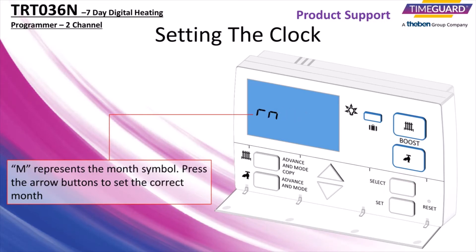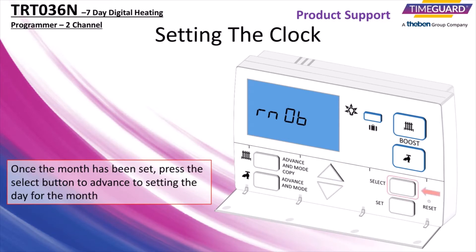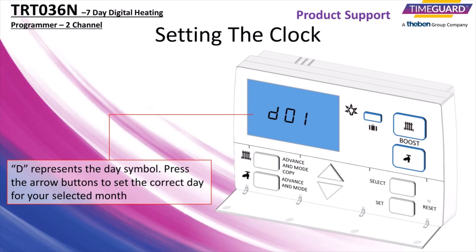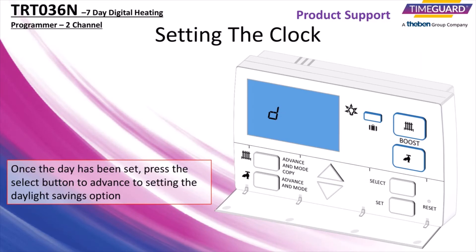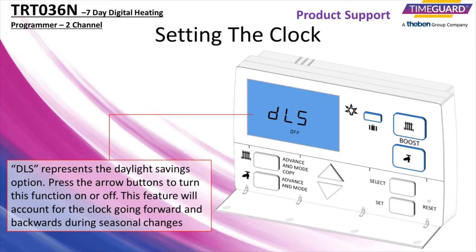D represents the day symbol. Press the arrow buttons to set the correct month. Once the month has been set, press the select button to advance to setting the day for the month. Once the day has been set, press the select button to advance to setting the daylight savings option. DLS represents the daylight savings option. Press the arrow buttons to turn this function on or off. This feature will account for the clock going forward and backwards during seasonal changes.